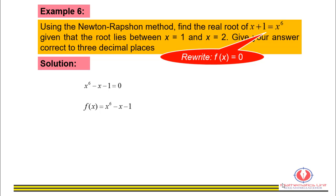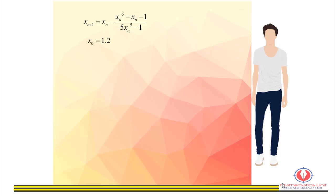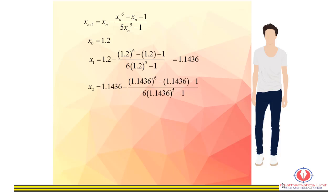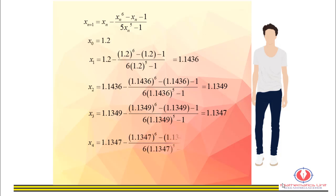We can choose any value between 1 and 2 as the initial value; I chose x sub 0 = 1.2. Find the first derivative of f(x) and write the iteration formula, then iterate until we get two consecutive same values. The answer is x = 1.135.